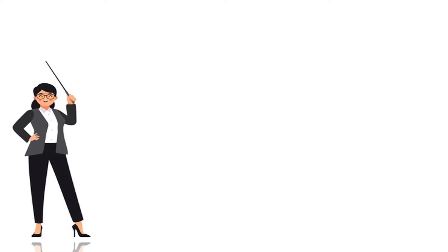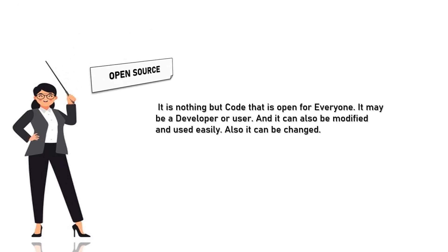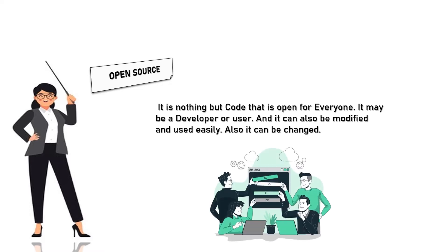Now let's talk about some of the features of the Android operating system. Let's see them briefly one after the other. 1. Open Source — It is nothing but code that is open for everyone, whether a developer or user, and it can also be modified, used, and changed easily.